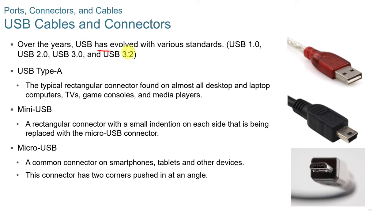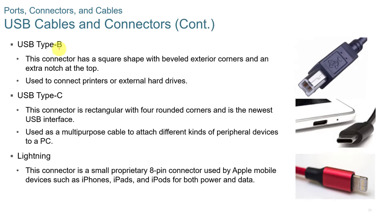USB has evolved from 1.0 through 3.0, up to 3.2. Type-A is the typical rectangular connector found on almost all desktop and laptop computers. Mini-USB is rarely seen anymore. Micro-USB is more common but falling out of favor with USB-C. Type-B is common on external hard drives and printers. USB-C is the most common type now — it has four rounded corners, can be plugged in either direction, and is a multi-purpose cable as of 2020-2021.